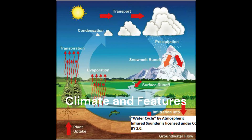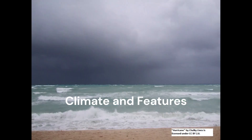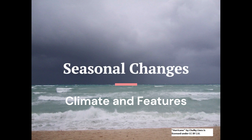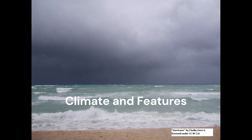Moving on to climate and features in the marine biome: rainfall is not a significant factor here. Instead, it is characterized by the water cycle and evaporation from the ocean surface, which contributes to the formation of clouds and precipitation on land. Temperature ranges in the marine biome vary depending on location and depth. Surface temperatures can range from near freezing in polar regions to tropical temperatures near the equator. The marine biome also experiences seasonal variations in temperature and sunlight, with distinct summer and winter seasons in some regions.